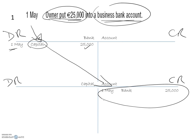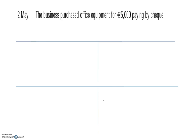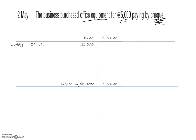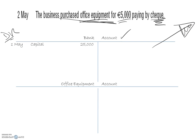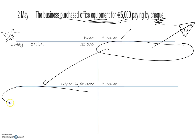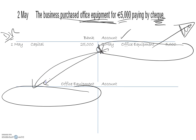2nd of May: the business purchased office equipment — an asset — for 5,000 euro, paying by cheque. Paying by cheque implies money came out of the bank. So we record that in the bank account and open an office equipment account. Money coming out of the bank is always on the credit side, so we credit the bank and debit the office equipment account: 2nd of May, office equipment, 5,000 on the credit side of bank; and 2nd of May, bank, 5,000 on the debit side of the office equipment account.